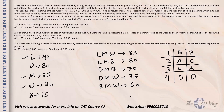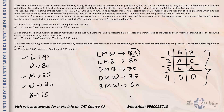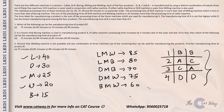Question 1 asks: which of the following can be the manufacturing time of product B? Since B has the highest time and there are five possible times but only four products, either 85 or 80 could be B's time. Among the answer options, 85 is valid. The correct answer is option B: 85 minutes.